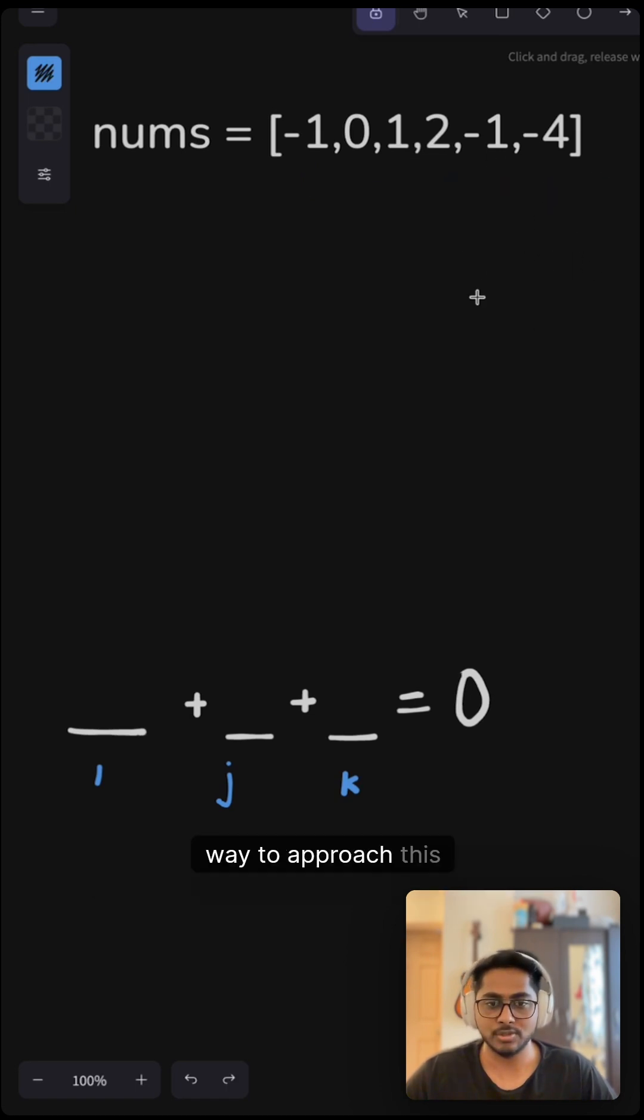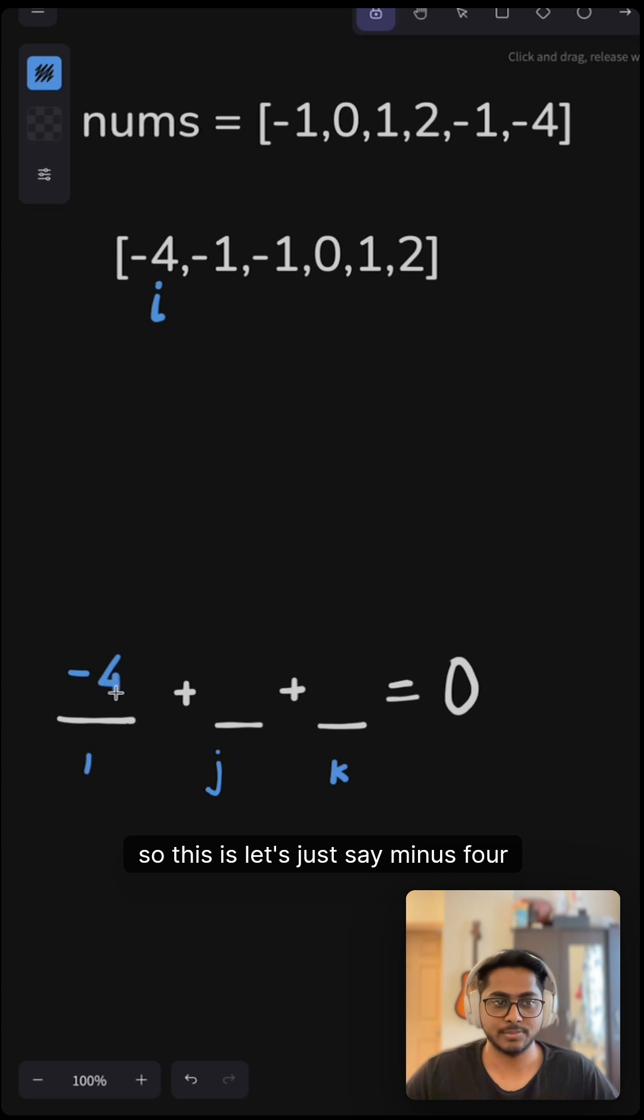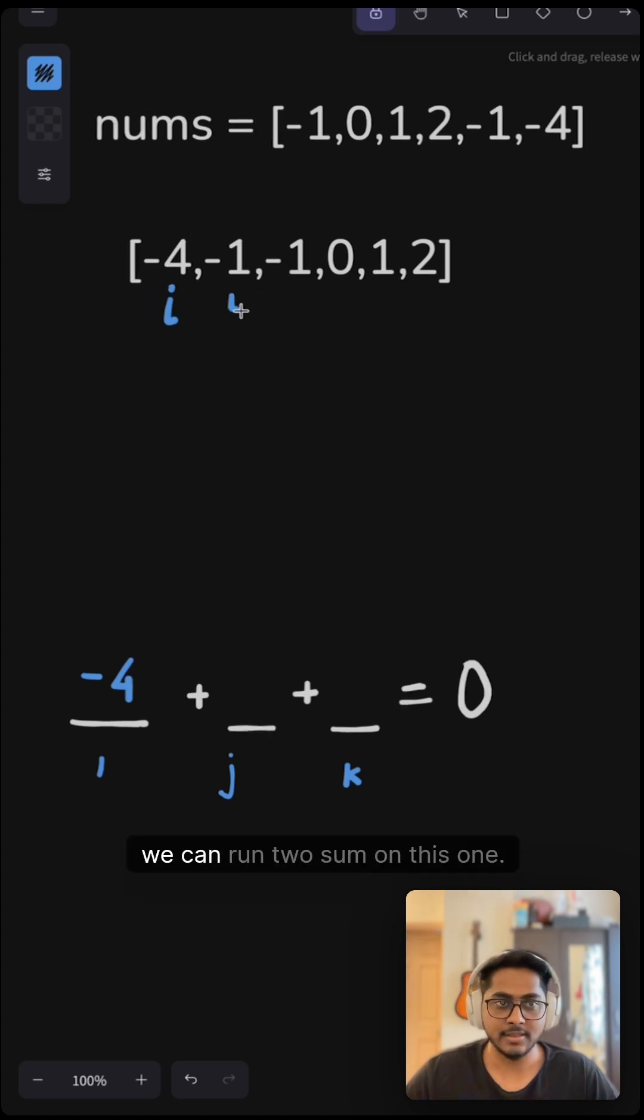A better way to approach this could be when we sort this array, we can have our first pointer fixed. So this is minus 4, and for the other two, we can run TwoSum on this one. So if you have solved TwoSum 2 where input array is sorted, this is exactly like the TwoSum 2 problem. We know that we can solve this using two pointers.